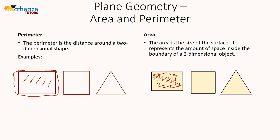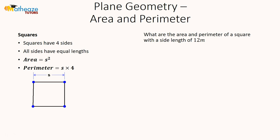Now let's look at squares. They have four sides and all sides are equal. The area of a square is s squared, and the perimeter is s multiplied by 4. What are the area and perimeter of a square with a side length of 12 meters? The perimeter is side length times 4, which is 12 meters times 4, giving us 48 meters.